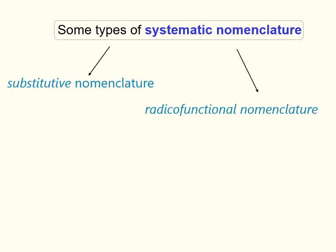There are eight basic nomenclature systems. Two of them are shown on the slide. These two nomenclatures, especially substitutive nomenclature, will be considered in greater detail.